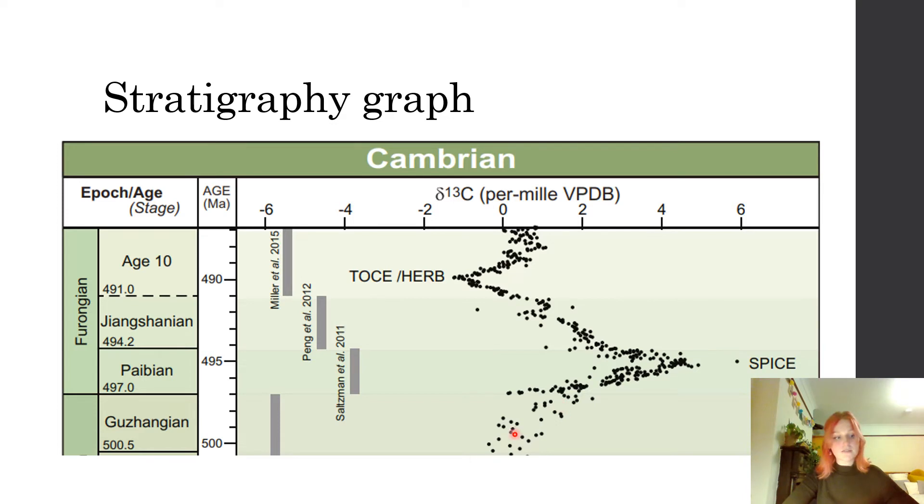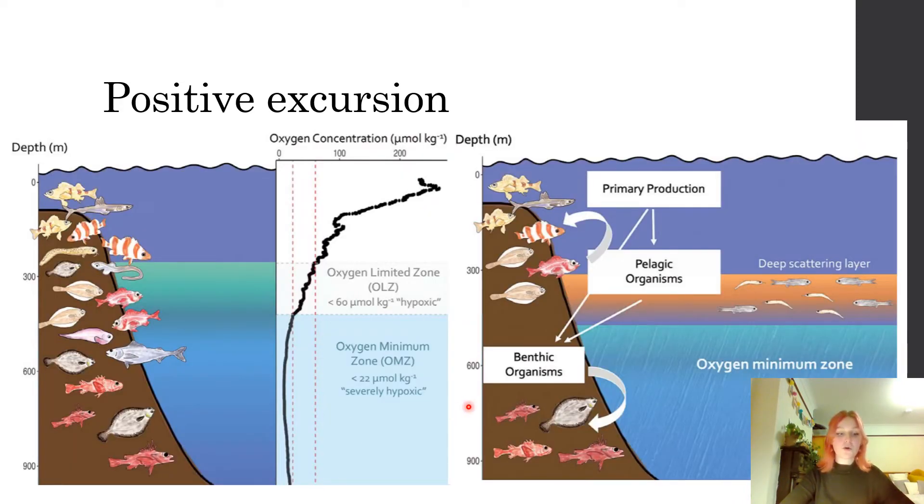At the start, it's fairly positive, which correlates to increased burial of organic matter. This further correlates to an expanding oxygen minimum zone, which causes an increase in productivity at the surface. Increased productivity creates anoxia, as when the algal bloom dies, microorganisms have to use up the oxygen within the water.